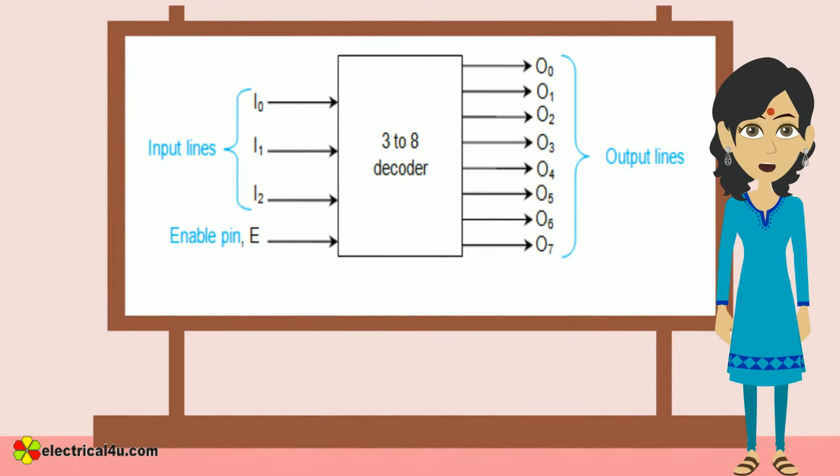In functionality, a binary decoder converts a definite sequence of input bits into a specific pattern as decided by the user based on the requirement.